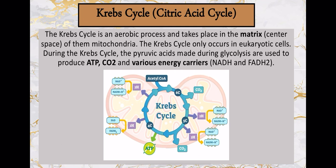The Krebs cycle was named after the guy who discovered it — his last name was Krebs. This is the first phase of cellular respiration actually happening in the mitochondria, specifically in the matrix — the central space of the mitochondria. It takes the stuff made in glycolysis, the pyruvic acid, some ATP and energy carriers, and makes more ATP, CO₂, and more energy carriers.